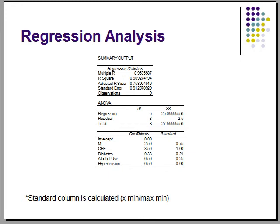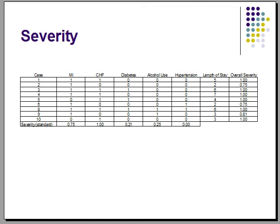The coefficients, however, required standardization. To do this, I entered a one for the highest coefficient, a zero for the lowest, and calculated the remaining by using the formula X minus min divided by max minus min. As you can see, the standard severity at the bottom of the table is shown here.